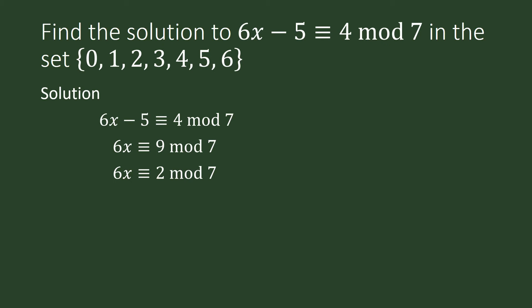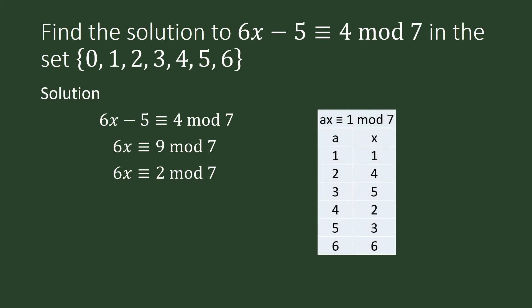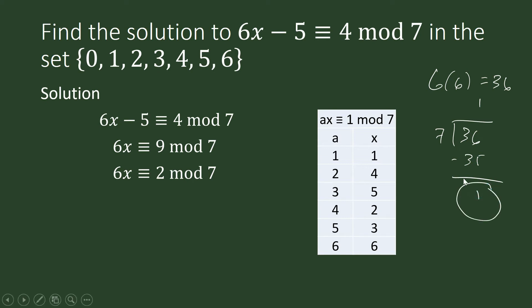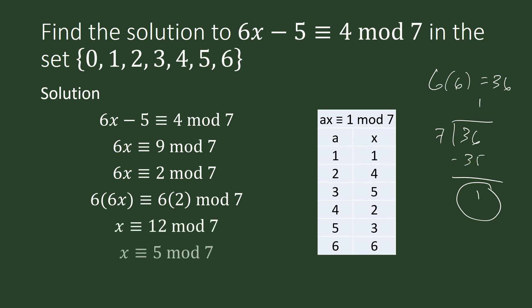We must look for the multiplicative inverse of 6 modulo 7. That inverse is 6, because 6 times 6 is 36, and when we divide 36 by 7, it gives a remainder of 1. That is what we are looking for when finding the multiplicative inverse. So multiplying through, 6 times 2 is 12, and 12 is congruent to 5 modulo 7. So the solution to this congruence equation from this set is x equals 5.